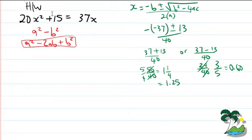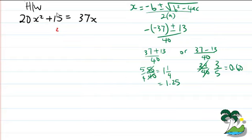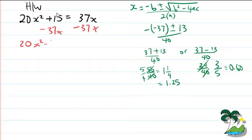Right now we have 37 on one side, and we really want this portion of the equation reorganized. So let's rewrite it: 20x² minus 37x plus 15 equals 0. That's good — now we have it in standard form.